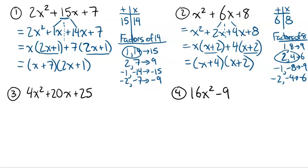Now I want to point out something: this is called a simple trinomial because the number in front of the x² is 1. Notice that the factors 2 and 4 are the same numbers that appear in the answer. This will always work with a simple trinomial — you don't actually need to decompose it, because the factors you get are always going to be the answers. You can see that it's not the same when you have a number other than 1 in front of the x² term, so we had to decompose that first example. But the second example, you can jump right to the answer.